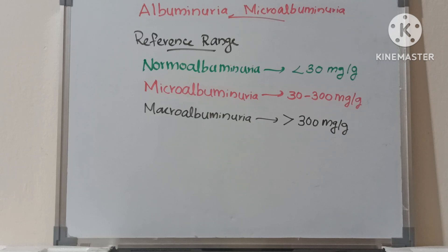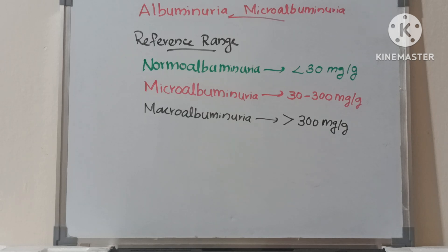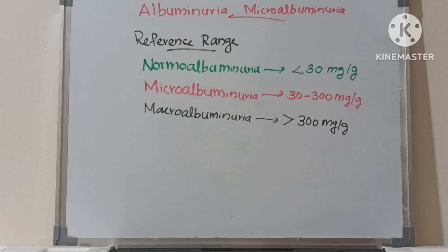The reference ranges are as follows: normoalbuminuria is less than 30 mg per gram; microalbuminuria is 30 to 300 mg per gram; and macroalbuminuria is greater than 300 mg per gram. This covers albuminuria, microalbuminuria, macroalbuminuria, and the albumin-creatinine ratio.